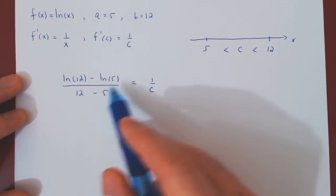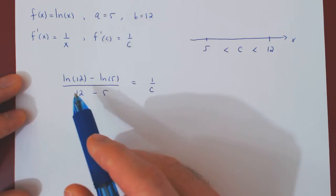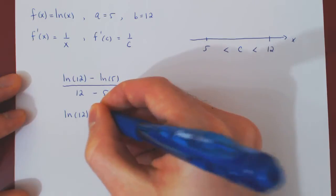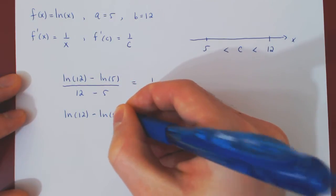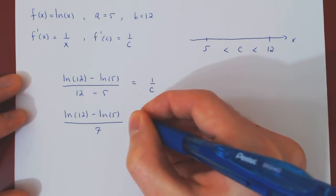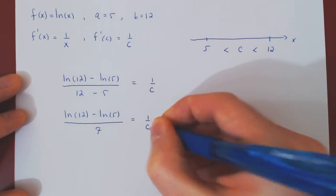Well, let's simplify this by simply noticing that 12 minus 5 is 7. So we have that the ln of 12, minus the ln of 5, over 7 is equal to 1 over c.